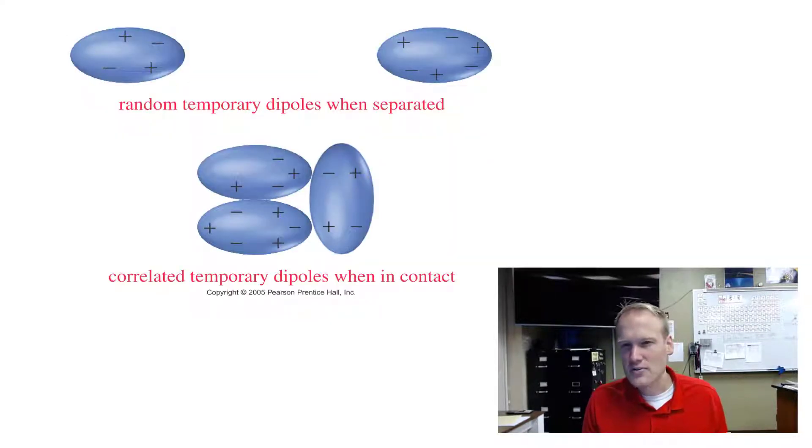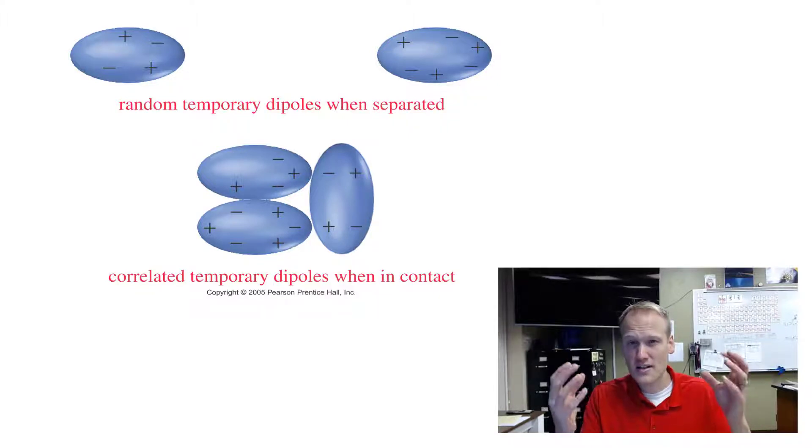This is just a diagram trying to show how, even within a non-polar molecule, you could have temporary positive and negative pockets. And those positive and negative pockets could cause molecules to react to one another and group up.